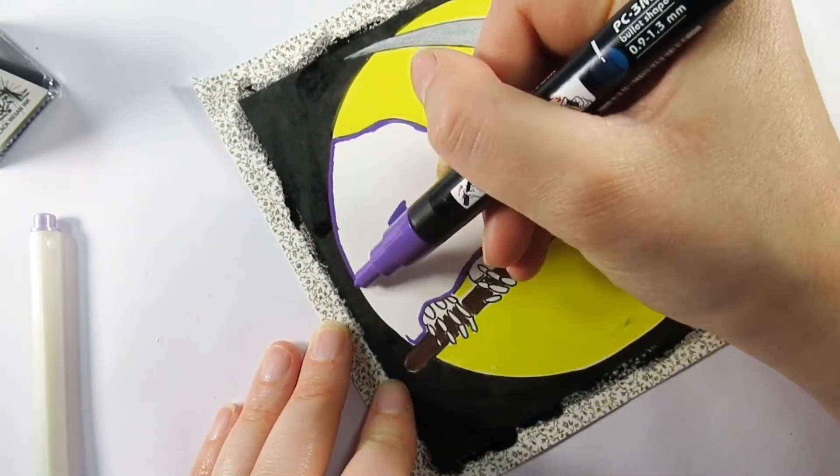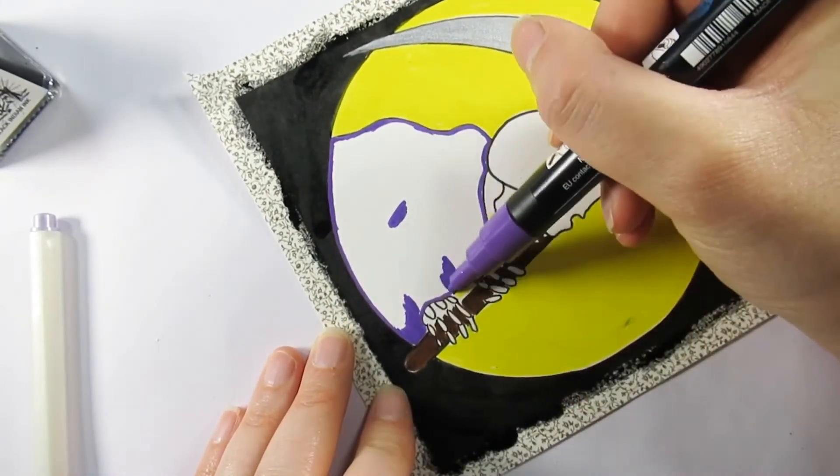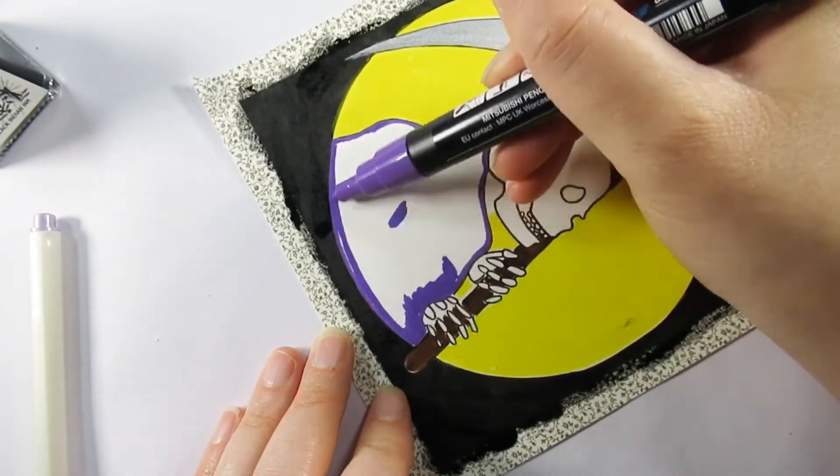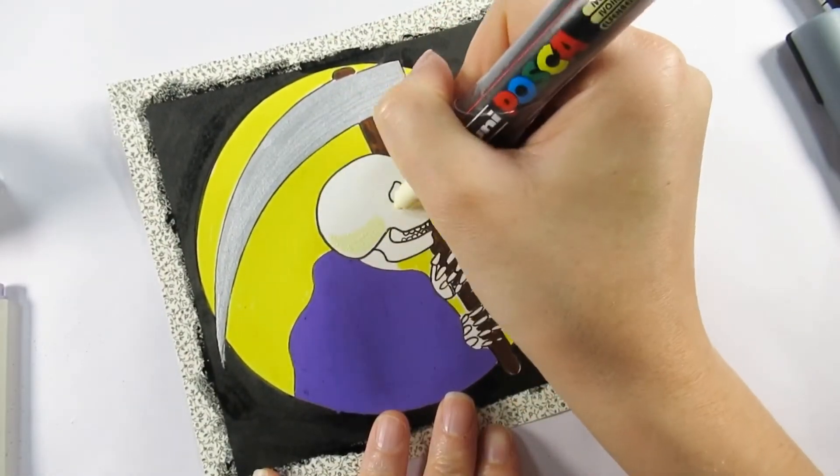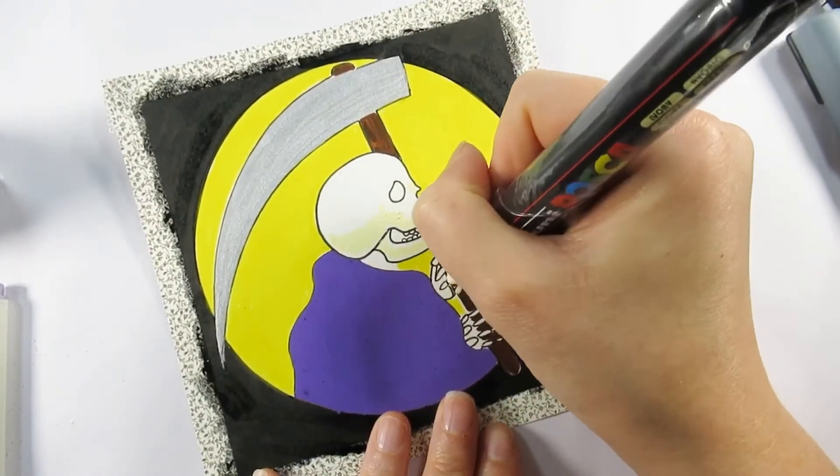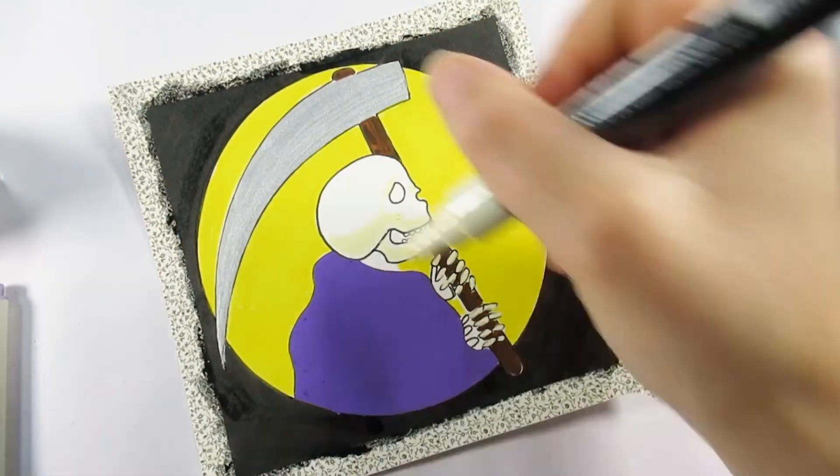And then for the cloak of the grim reaper, yeah I'm back in there with them Poscas again. But I wanted to have a purple cloak for him rather than a black one because we've got the black background and I think he would just vanish.